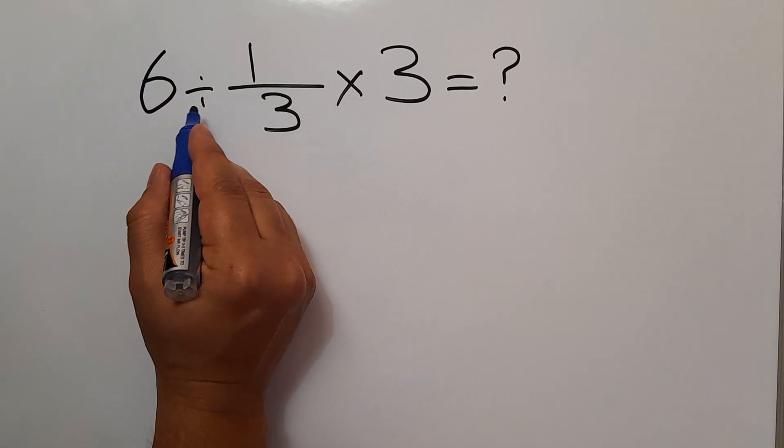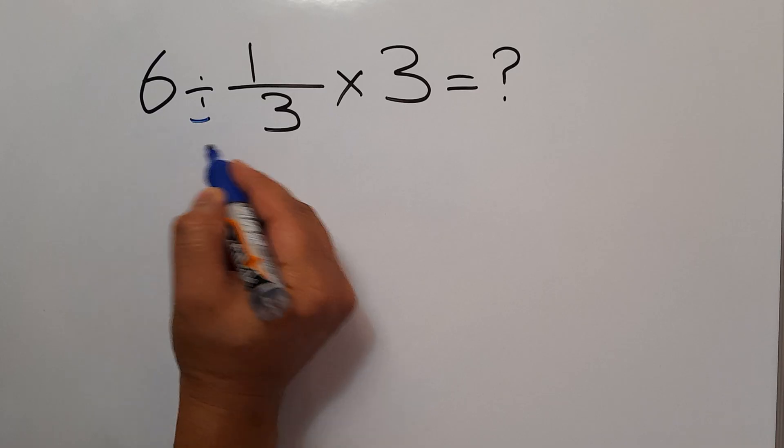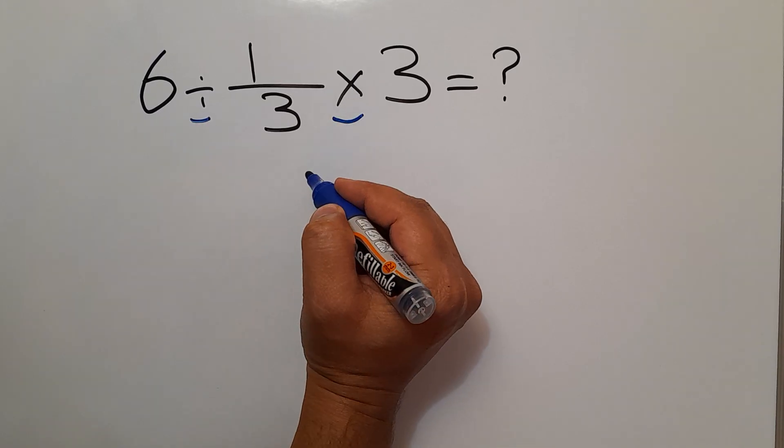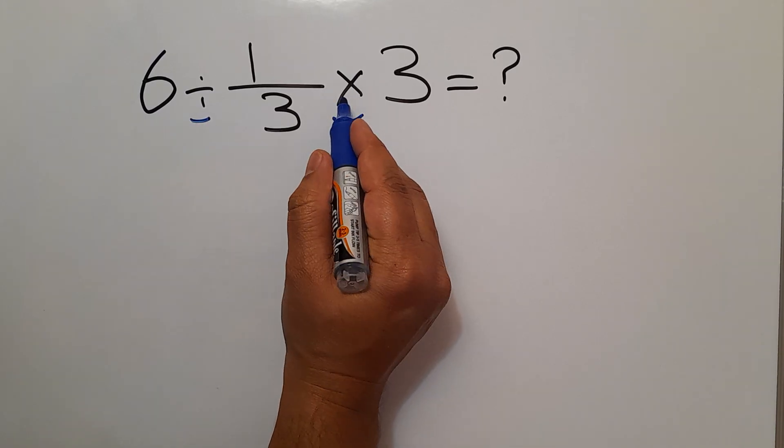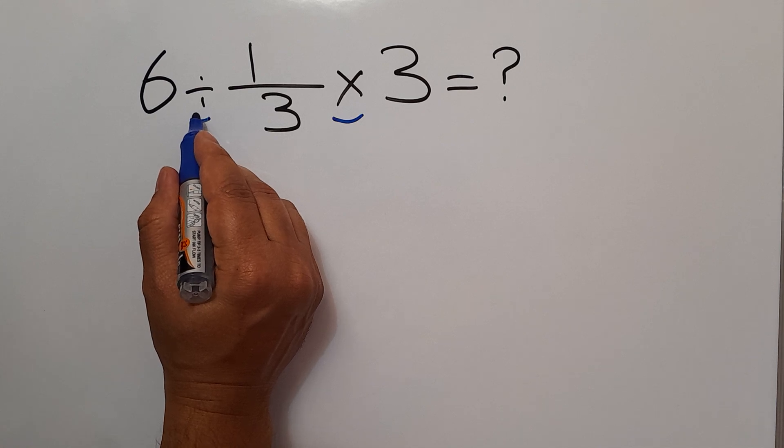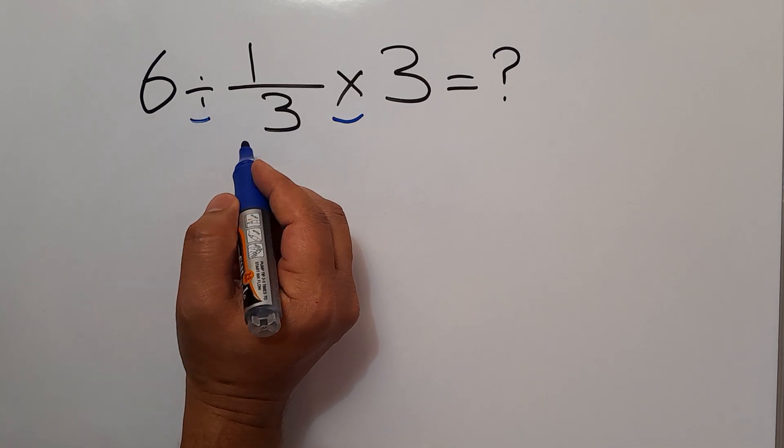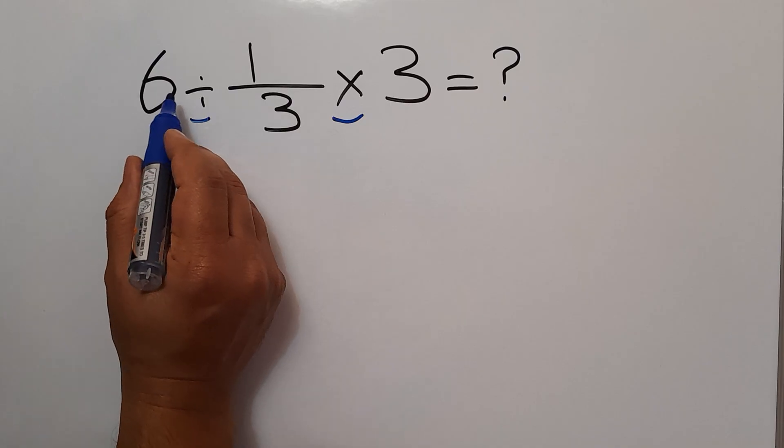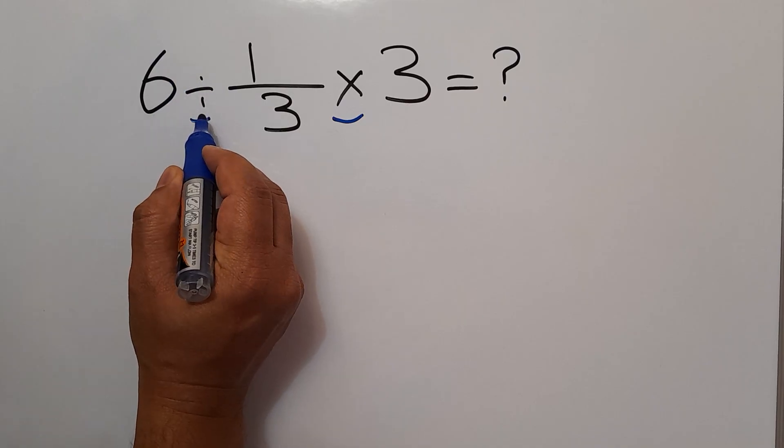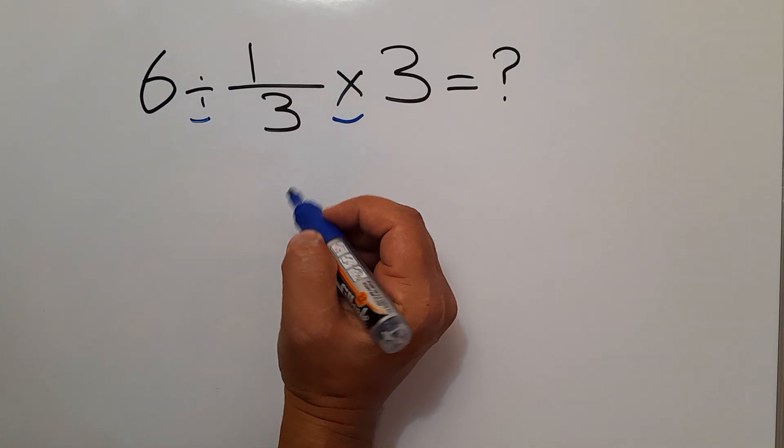This expression has one division and one multiplication. As we know, multiplication and division have equal priority and we have to work from left to right. So we first do this division and then this multiplication.